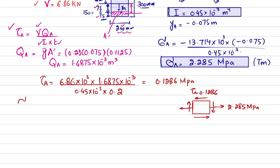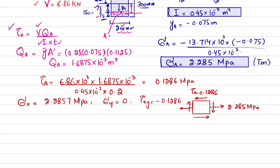To summarize the plane state of stress at point A: σX = 2.2857 MPa, σY = 0, and τXY = −0.1286 MPa. The shear stress is negative because point A is below the neutral axis.